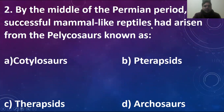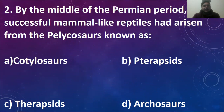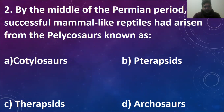By the middle of the Permian period, other successful mammal-like reptiles had arisen from the Pelycosaurs. The organism or group that arose from Pelycosaurs is known as the Therapsids. The right answer is Therapsids, option C. So Therapsids were originated from Pelycosaurs.